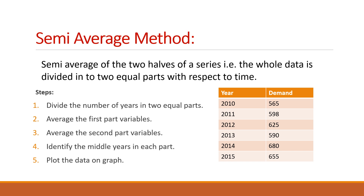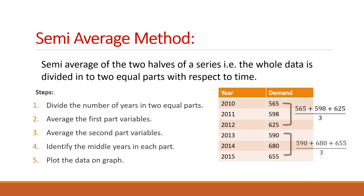The steps in the semi-average method: First, we have to divide the number of years into two equal parts. Here we have an example of six years data, so first we divide the series into two equal parts — that is the first three and the next three. Next, we have to average the first part variables. The first part is 2010, 11, and 12; we have to average it, adding the values of y and dividing by three. In the same manner, for the second part also, we have to find the average of the y variable.